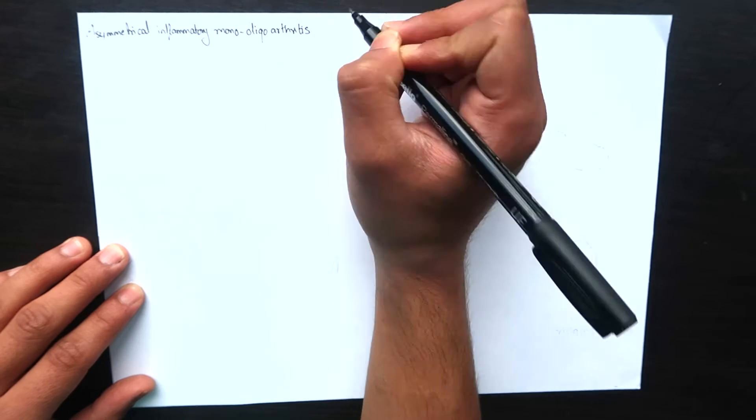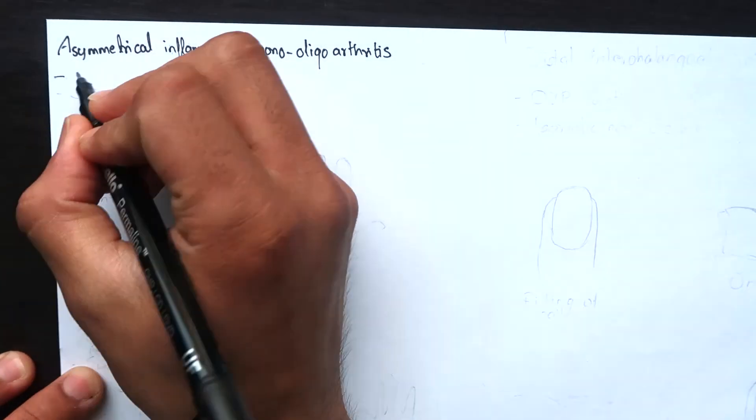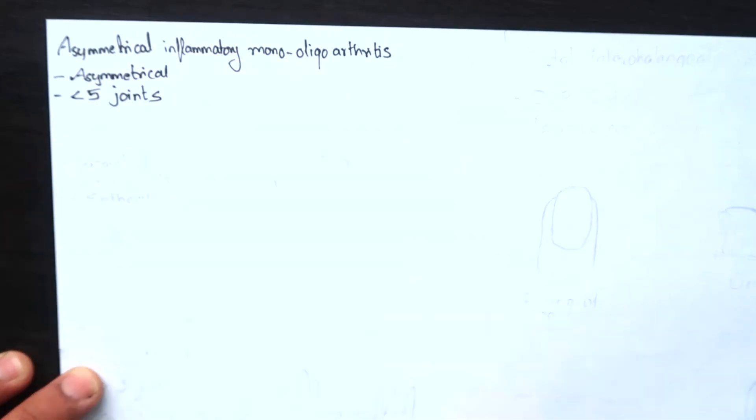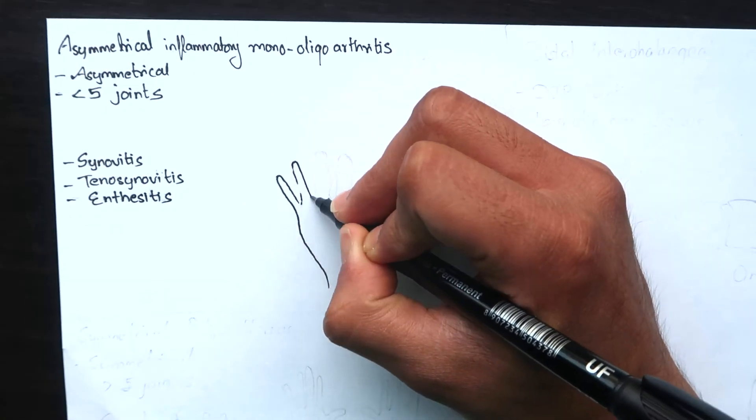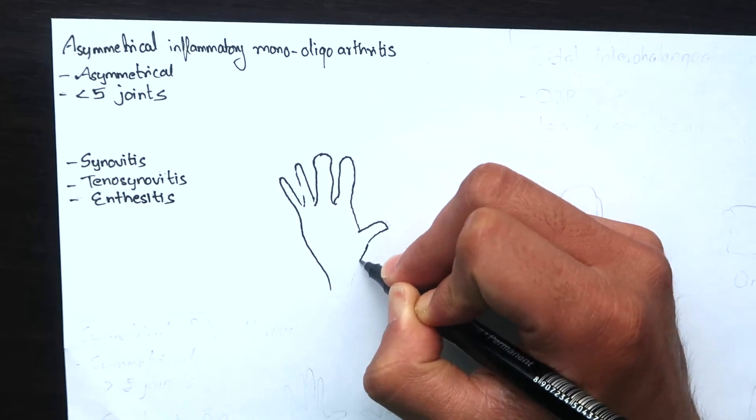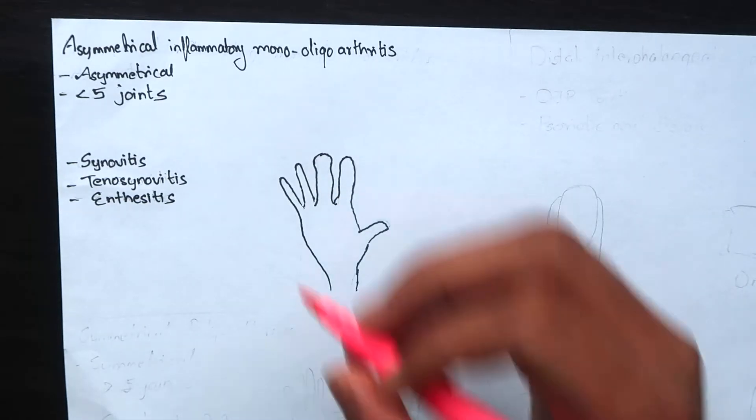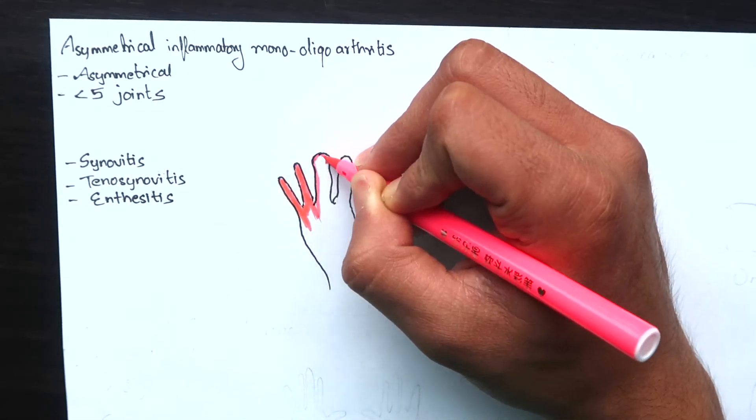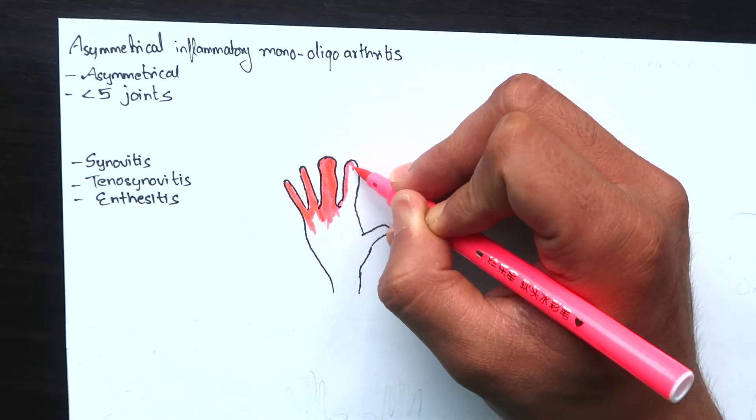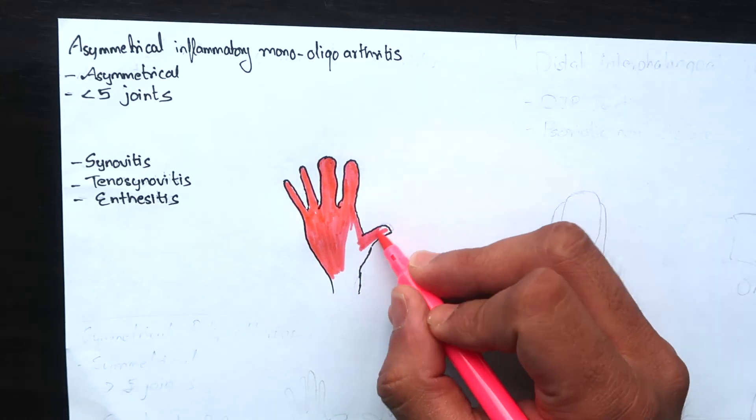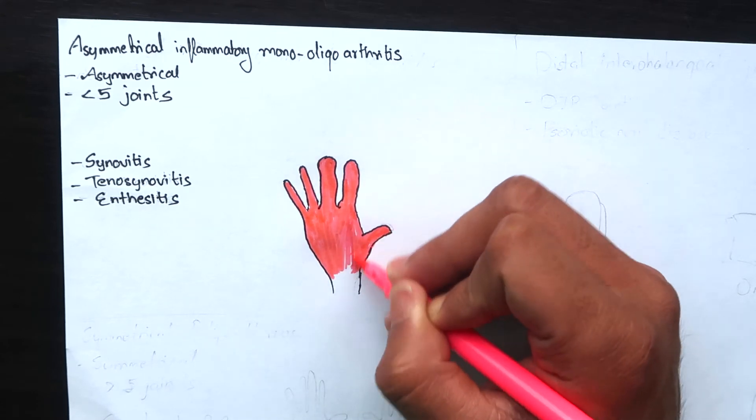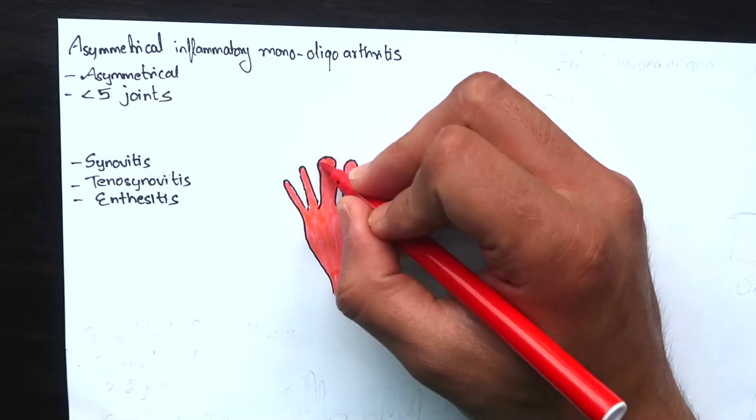Now let's talk about the clinical features of psoriatic arthritis. There are five types. First one is asymmetrical inflammatory mono or oligoarthritis. As the name suggests, it is asymmetrical and affects fewer joints. It occurs most characteristically in the hands and feet. Synovitis with tenosynovitis and enthesitis can lead to dactylitis or sausage disease.